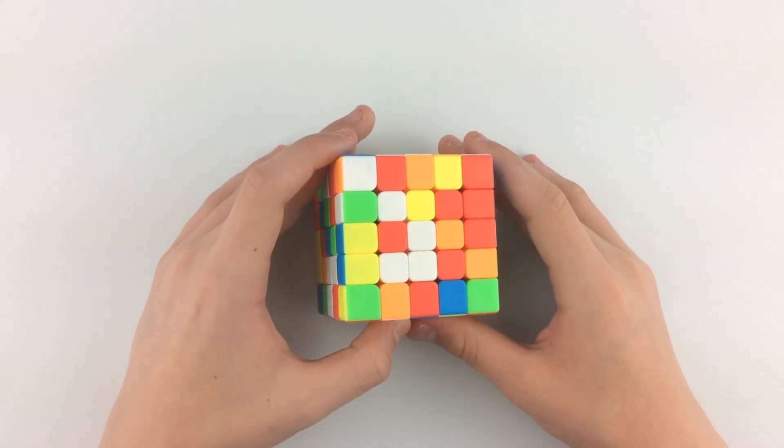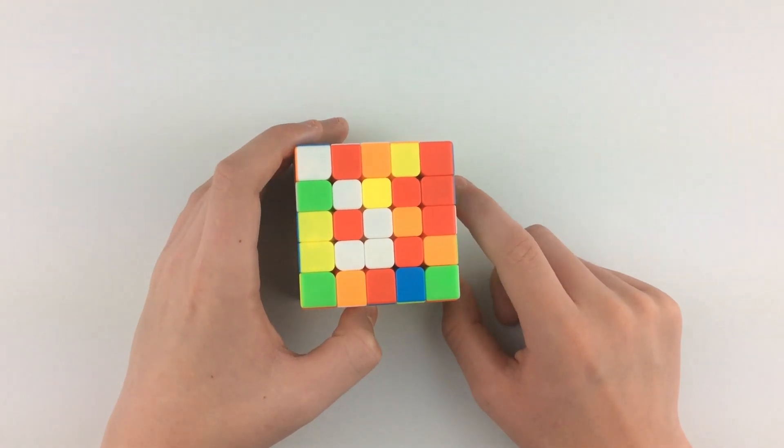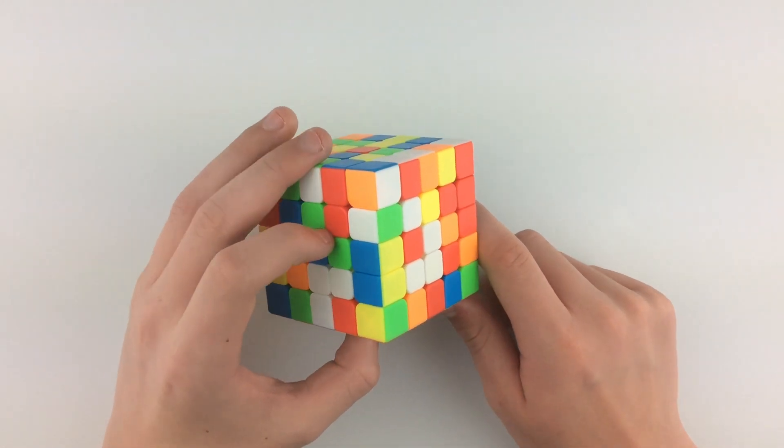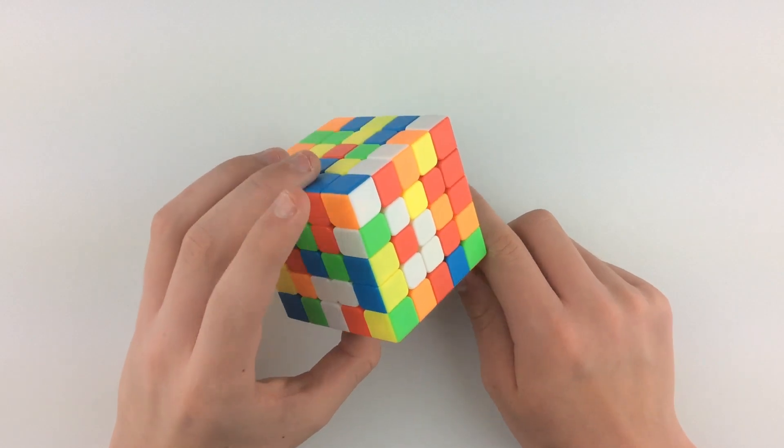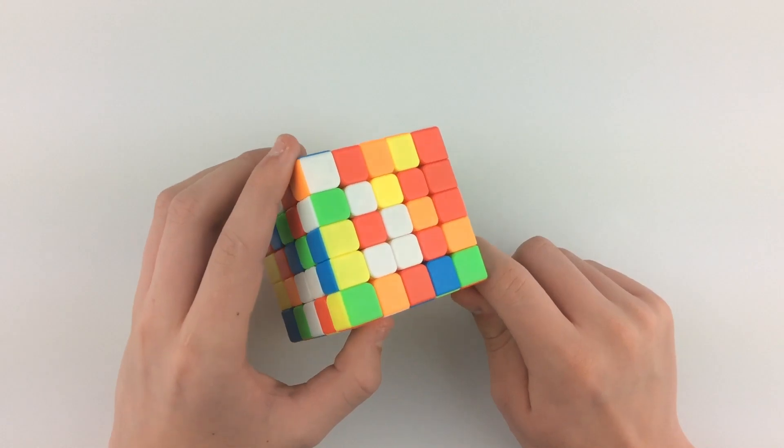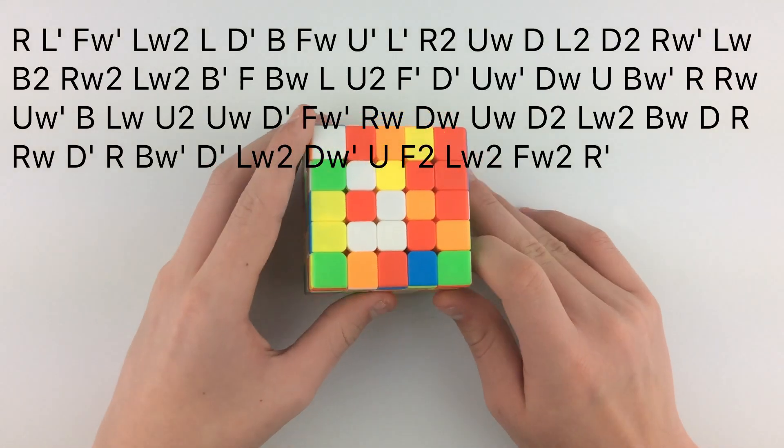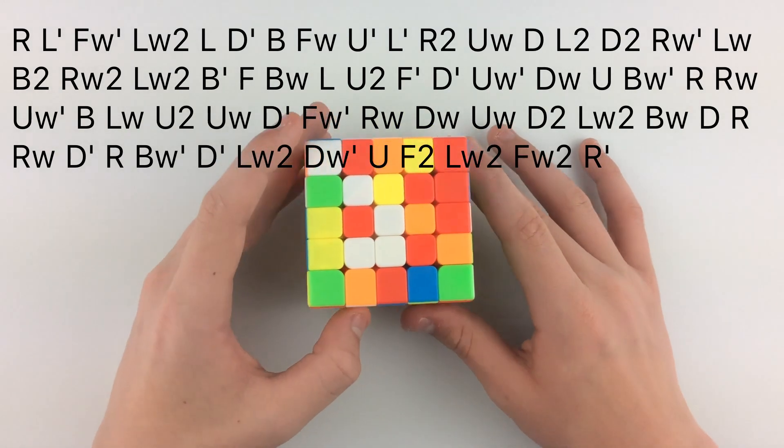What's up guys, this is MDcuber and in this video I will be doing one 5x5 walkthrough solve. I will be using the Magnetic Meilong 5x5 sent to me by RLcubeshop. The links to this cube and to RLcubeshop will be in the description. The scramble will be on screen now, so you can pause the video if you want to follow along.